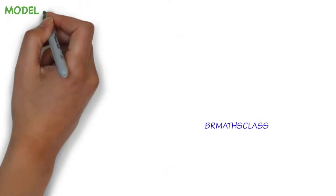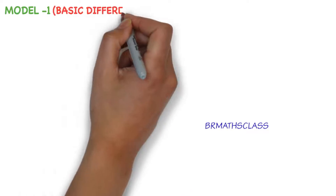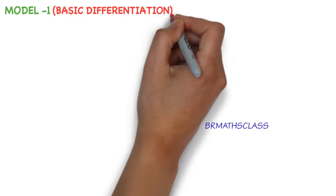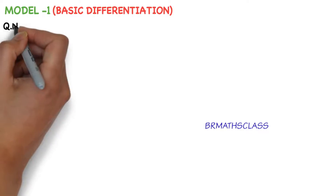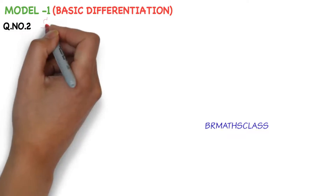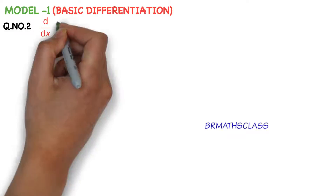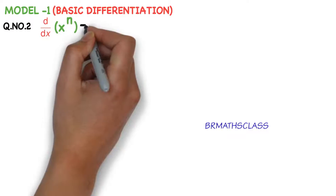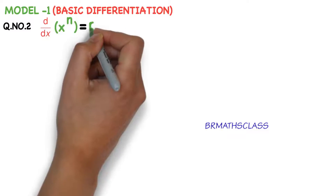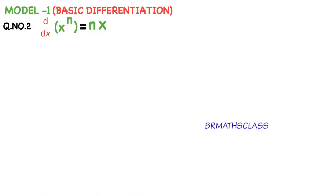Model number 1. This is the second class in model number 1. We are learning basic differentiation — how to apply the derivative formulas we have learned. Question number 2 in this model. We already learned in class 1 how to apply d by dx of x power n. We already learned this in the previous class how to apply this formula. I just want to revise it with a problem.